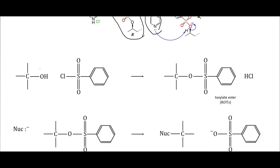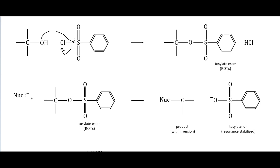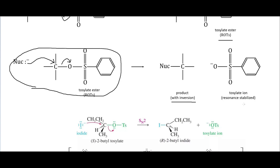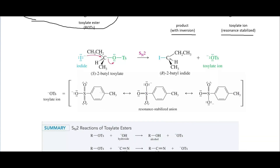The alcohol attacks the tosyl chloride, the chlorine leaves, and we have our tosylate ester. We then bring in a nucleophile, which attacks the carbon bearing the tosylate ester. The electrons go to the oxygen and we generate a new product with inversion of configuration, since this is an SN2 reaction. For example, using iodide as our nucleophile, the tosylate ion leaves — which is resonance stabilized — and we go from S to R stereochemistry.